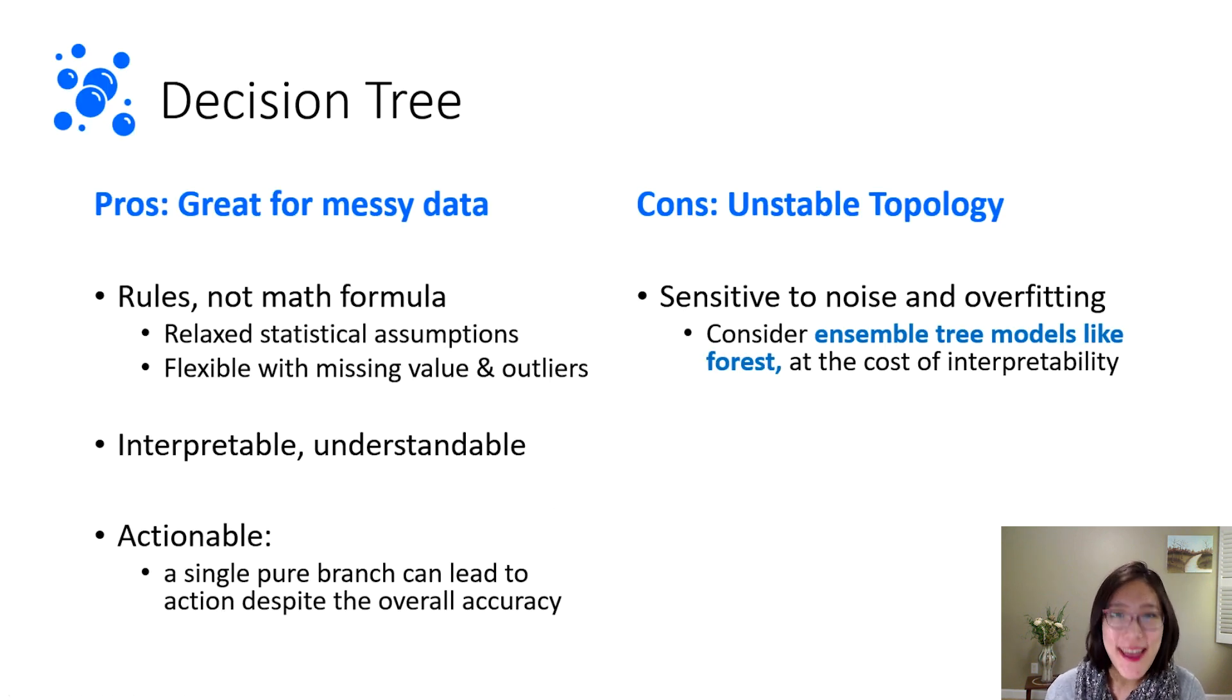Decision tree, in my opinion, is great for messy data because it's essentially a set of rules to partition the data as compared to a math formula. Being not a math formula, it means you can be relaxed on some of the statistical assumptions, and you can be more flexible handling missing values and outliers. For example, you don't need to replace missing values in order to use it in a math formula.